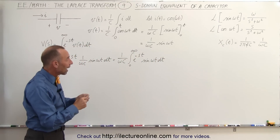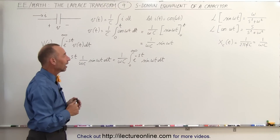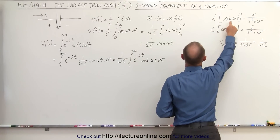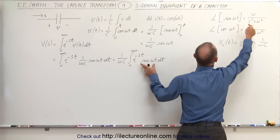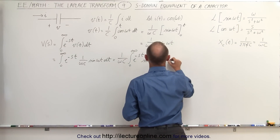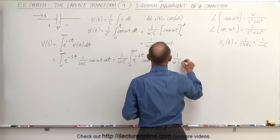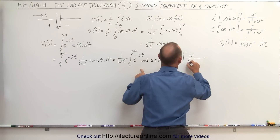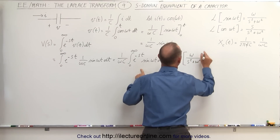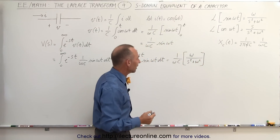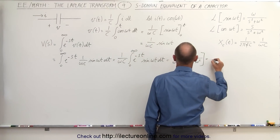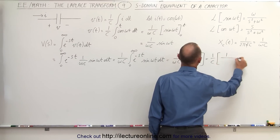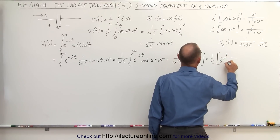In previous videos we already showed how to take that integral. The Laplace transform of the sine of omega t is omega divided by s squared plus omega squared. So this can be written as 1 over omega C times omega divided by s squared plus omega squared. Simplifying, the omegas cancel out, and we have 1 over C times 1 over s squared plus omega squared.